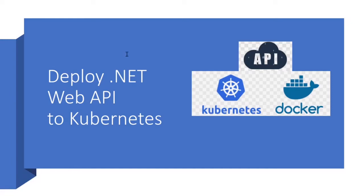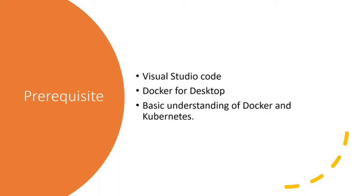Nowadays many companies are using Docker and Kubernetes to deploy applications and web APIs on different platforms, so that apps will work seamlessly in all environments. Hi, I am Rajat. In this video we will see how we can deploy a .NET Web API in a Kubernetes cluster, so let's get started.